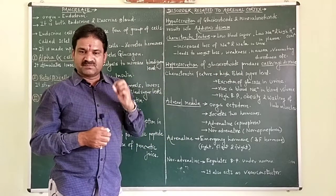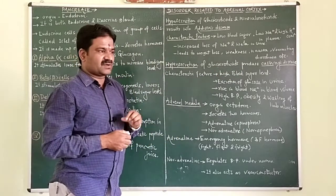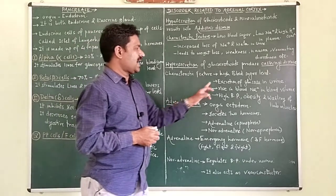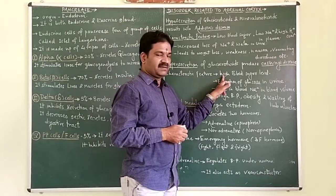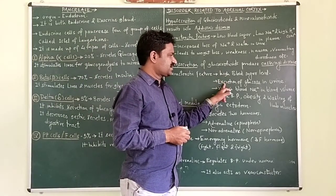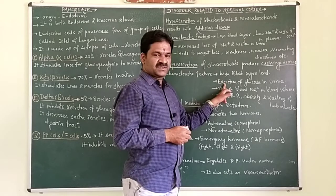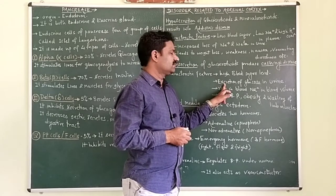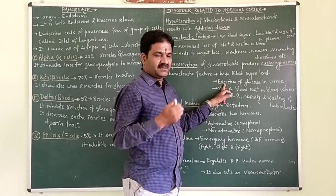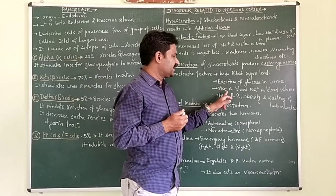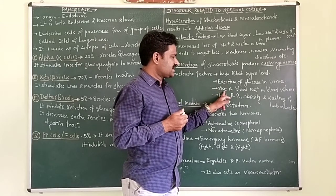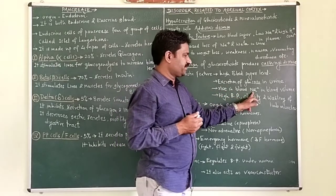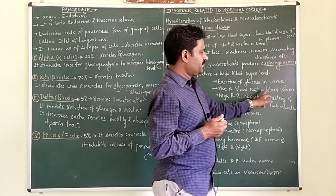The symptoms or characteristic features of Cushing's disease are: high blood sugar level, excretion of glucose in urine, which may lead to diabetes mellitus, and a rise in blood sodium and blood volume.